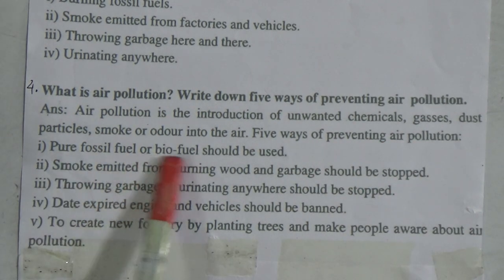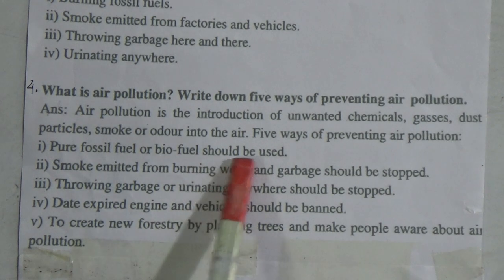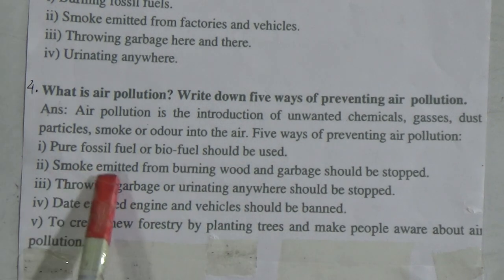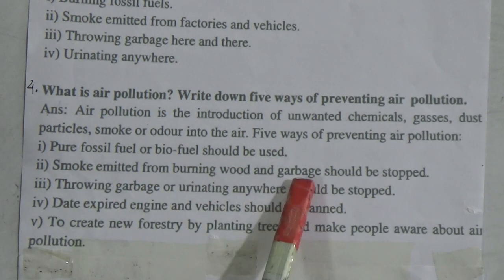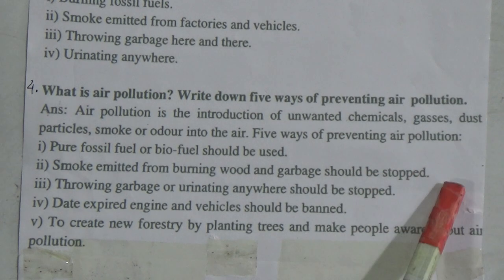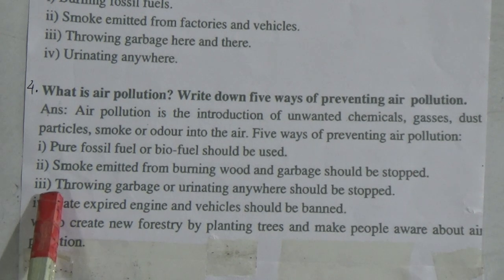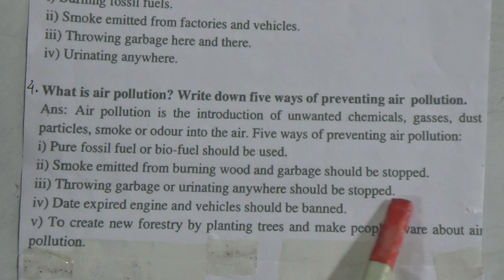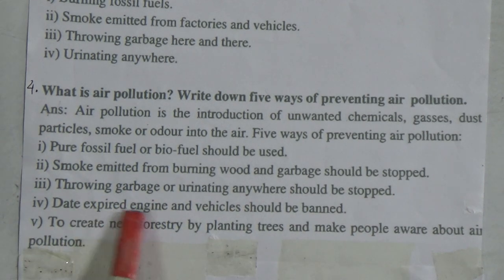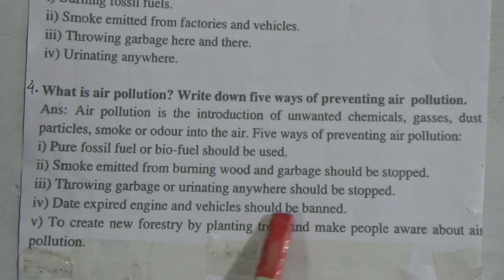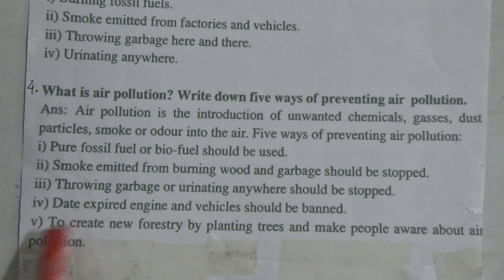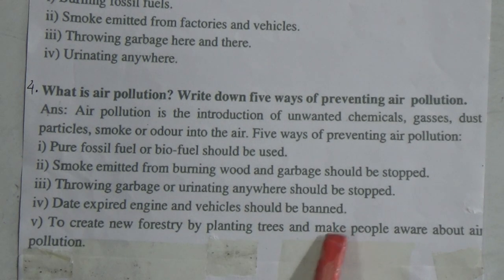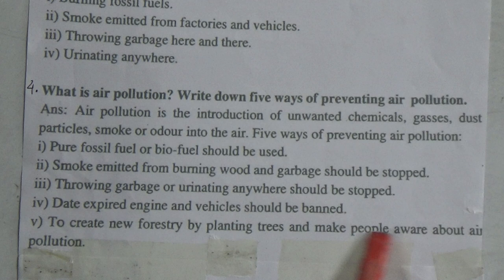The five ways of preventing air pollution are: first, pure fossil fuel or biofuel should be used; second, smoke emitted from burning woods and garbage should be stopped; third, throwing garbage or urinating anywhere should be stopped; fourth, defective engines and vehicles should be banned; and fifth, create new forestry by planting trees and make people aware about air pollution.